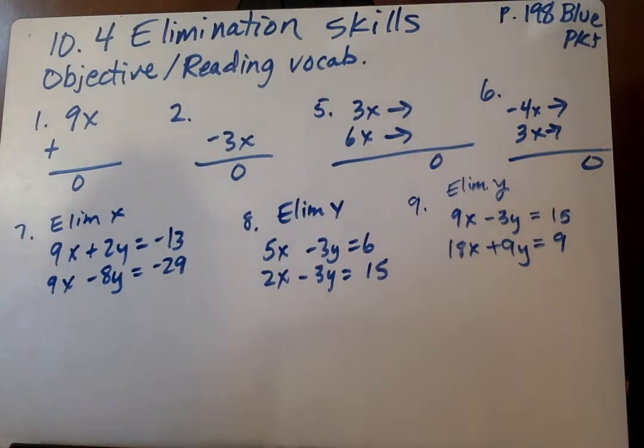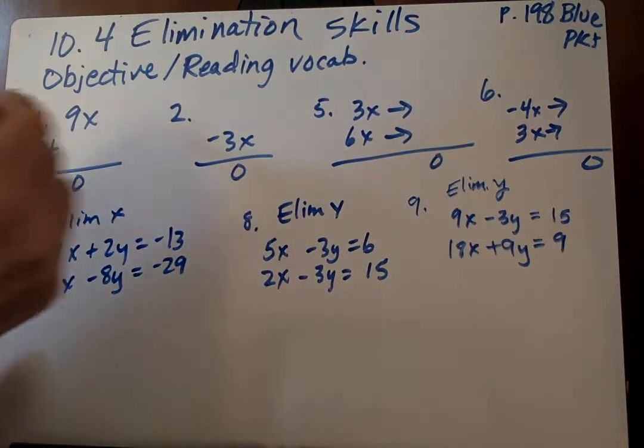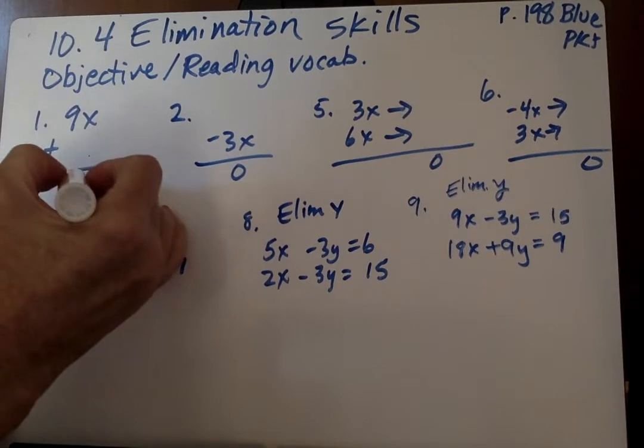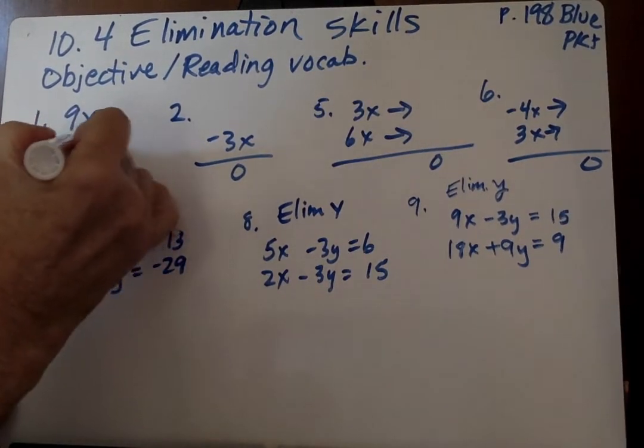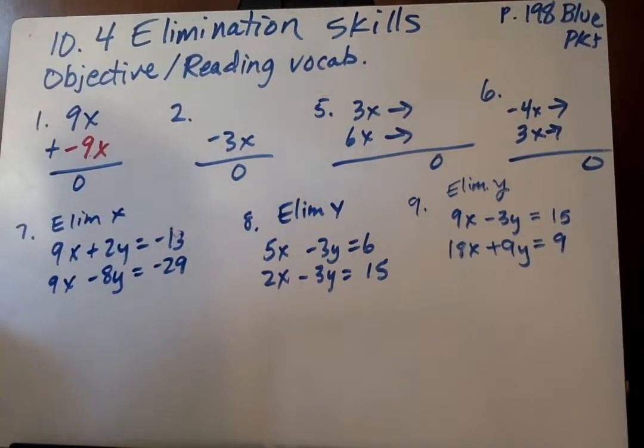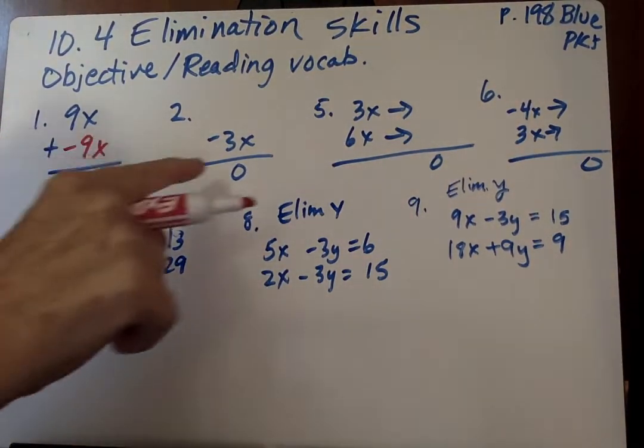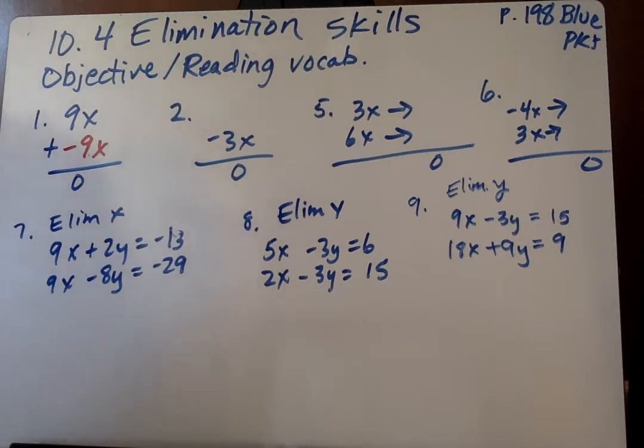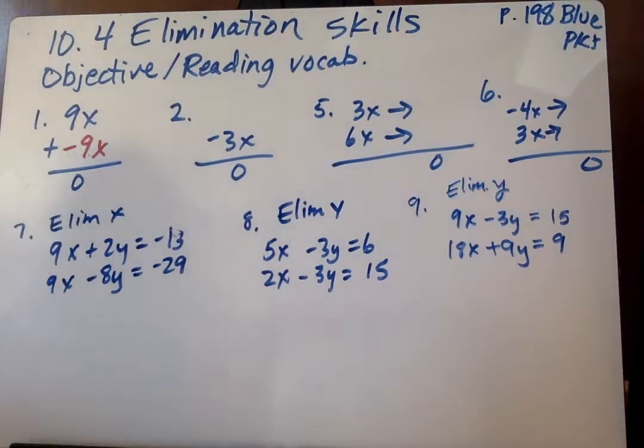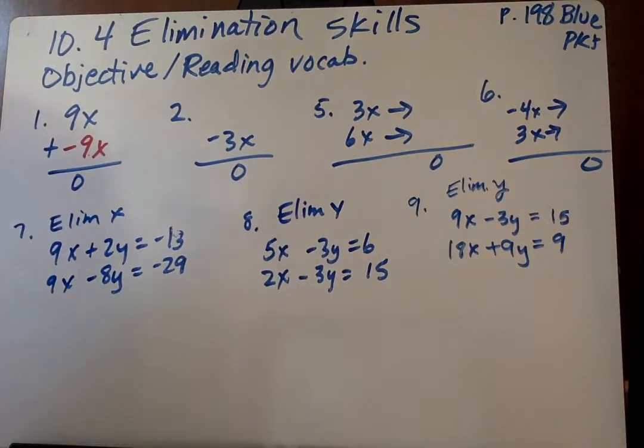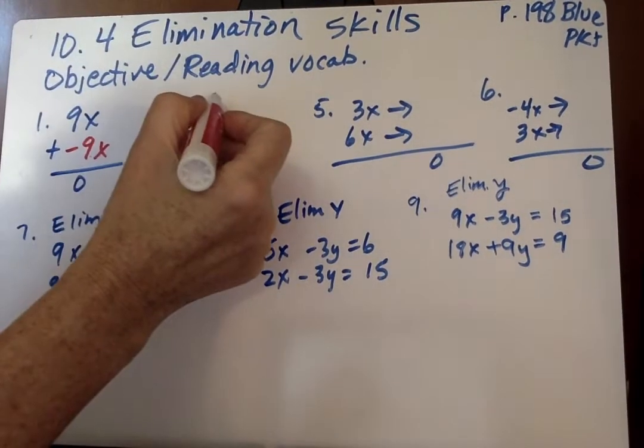So we want you to create zero pairs here. We have 9x plus something is zero. What do we add to that? Negative 9x, and we're done. Next we go on to the next one, and we think, what is the opposite of negative 3x? The opposite of negative 3x is positive 3x, so we just put 3x here.